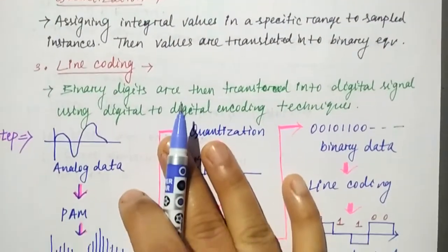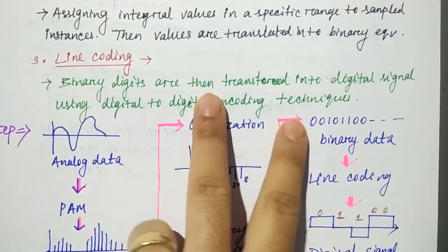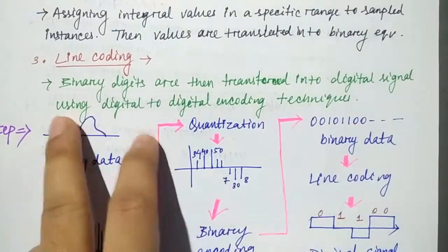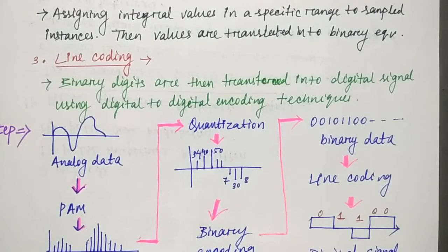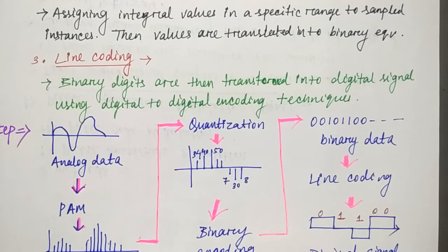The last step is Line Coding. In line coding, the binary digits are transferred into digital signals using digital-to-digital encoding techniques — unipolar, polar, or bipolar. The binary digits are converted into the final digital signal using these techniques.